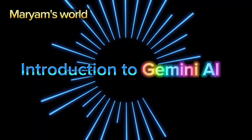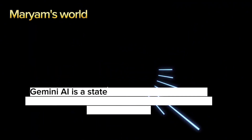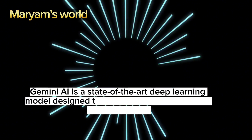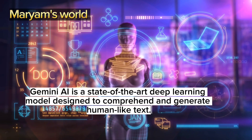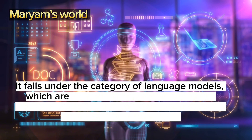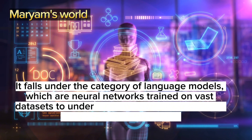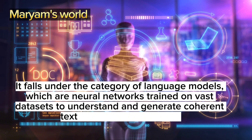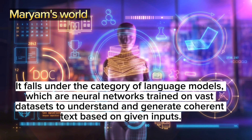Introduction to Gemini AI. Gemini AI is a state-of-the-art deep learning model designed to comprehend and generate human-like text. It falls under the category of language models, which are neural networks trained on vast datasets to understand and generate coherent text based on given inputs.